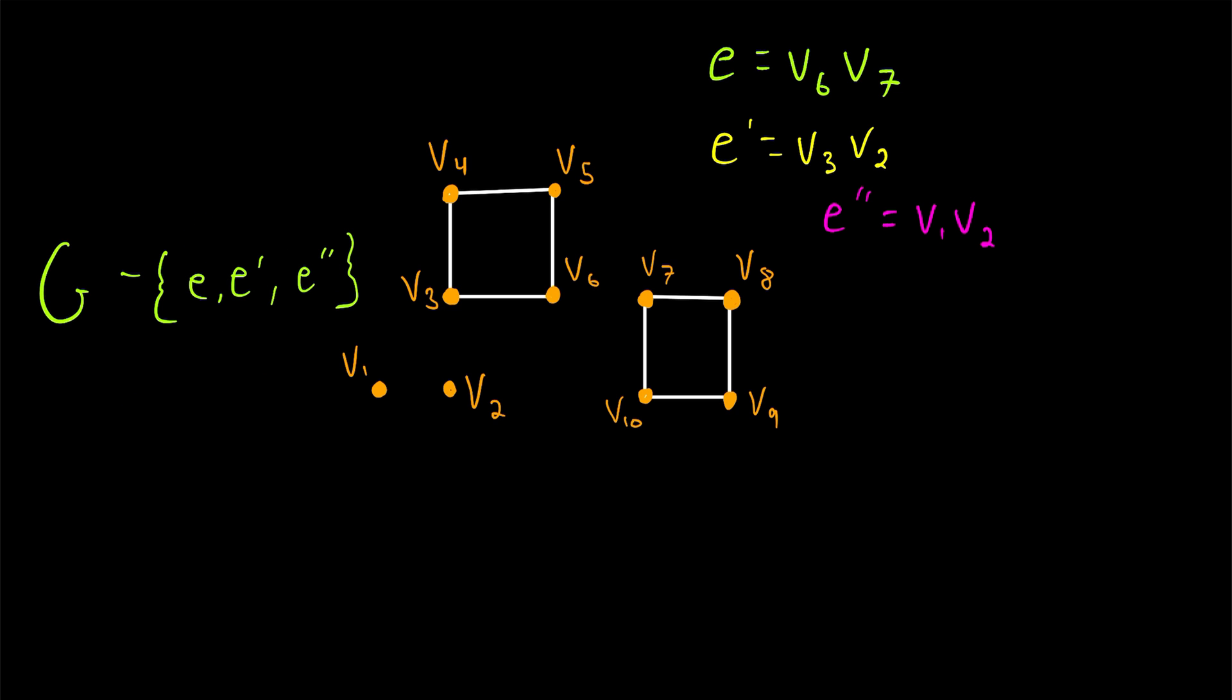And remember how once we deleted our first bridge, we went from one component to two components. Then we deleted our second bridge E prime, and we went from two components to three components. Then we deleted another bridge, E double prime, and again that gave us one additional component. Now we've got a graph with four components.